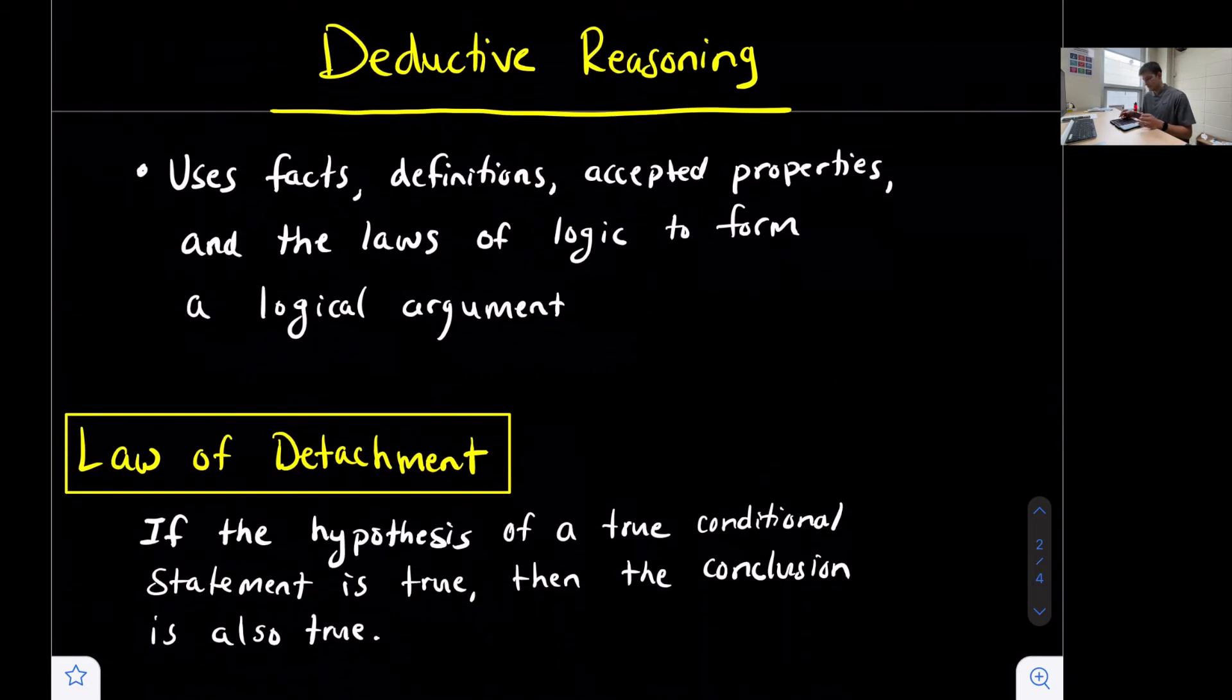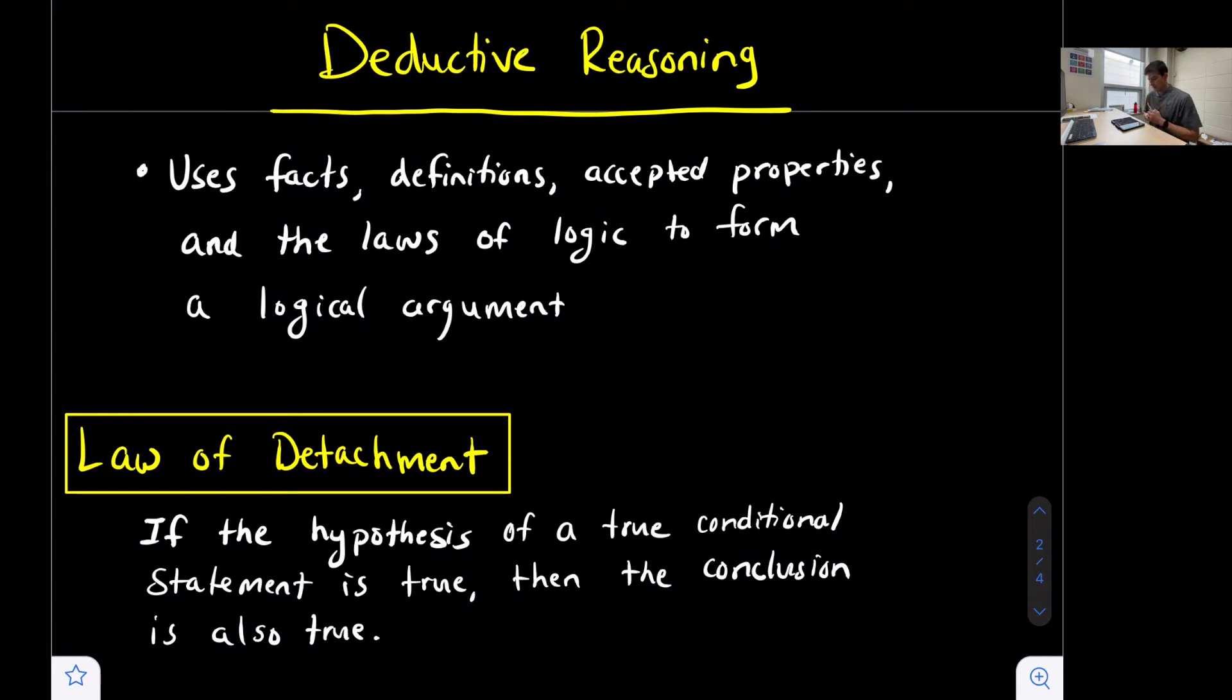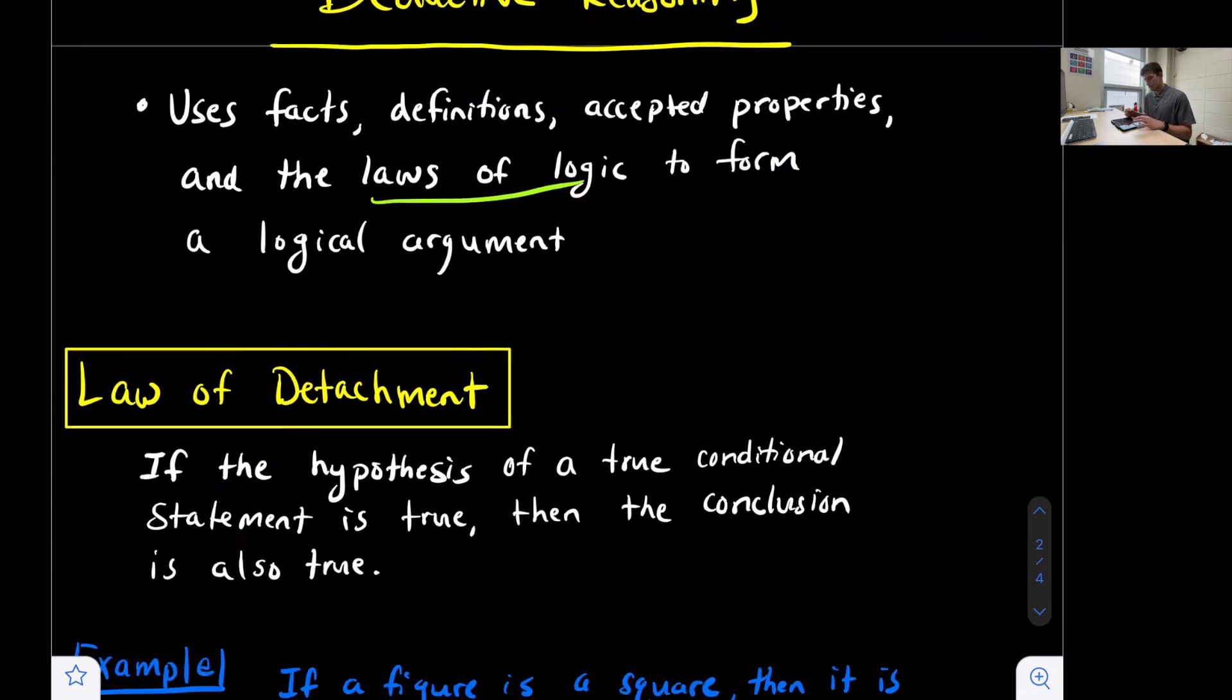Let's look at deductive reasoning. Deductive reasoning is where we use facts, definitions, accepted properties, and the laws of logic to form a logical argument. So these laws of logic, we're going to talk about two in particular.